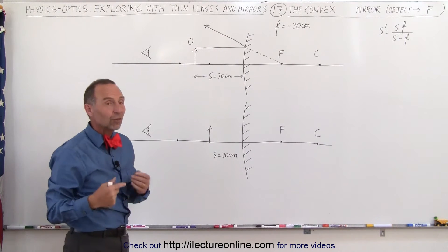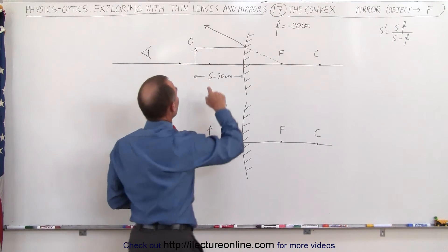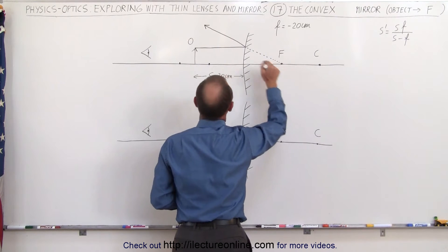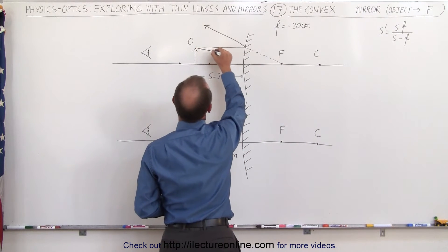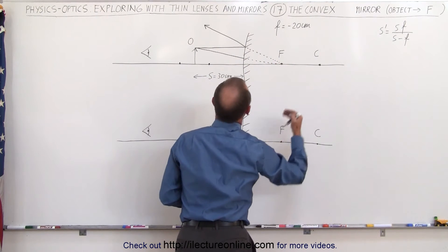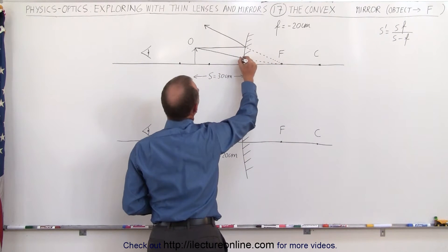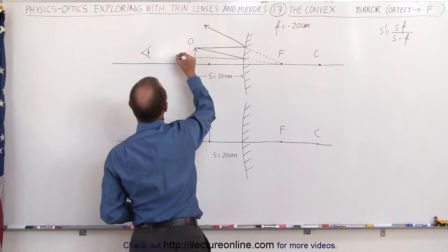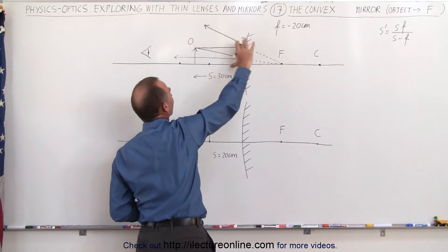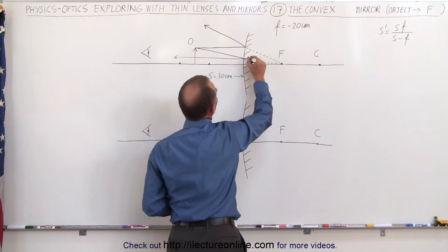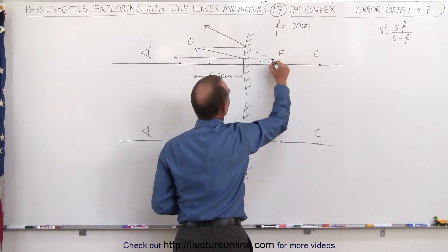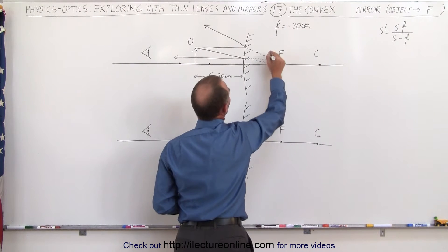The second ray is always different. It will be drawn from the top of the object toward the focal point behind the mirror. But before we get to the focal point, the ray will be reflected back parallel to the optical axis. The observer on this side sees those two rays emanating from the mirror, and the brain perceives them as coming from the direction where the two rays meet — that's where the image will be placed.